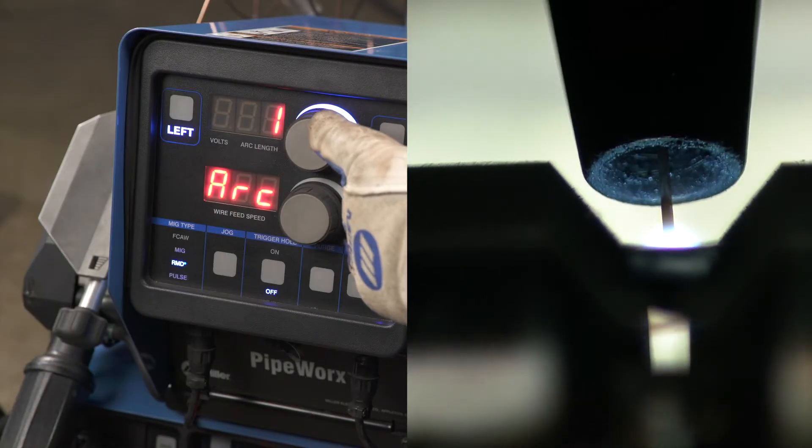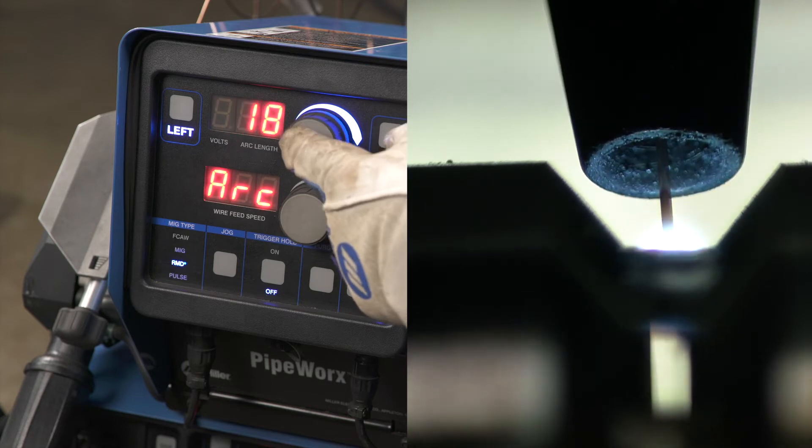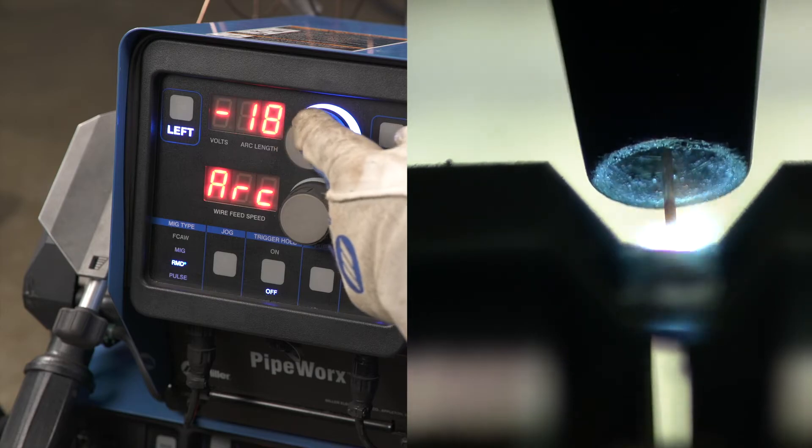Arc control in RMD is used to change the droplet size. Increase for a larger droplet, decrease for a smaller droplet. 0.0 is the recommended setting.